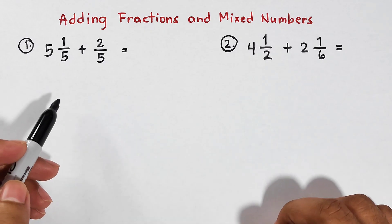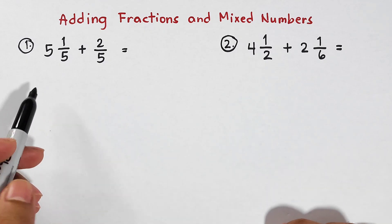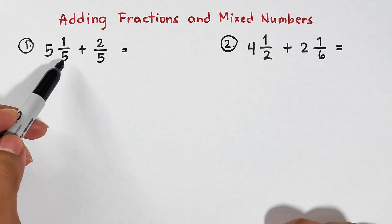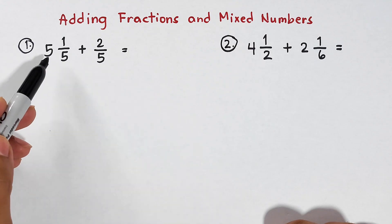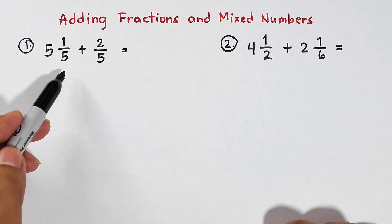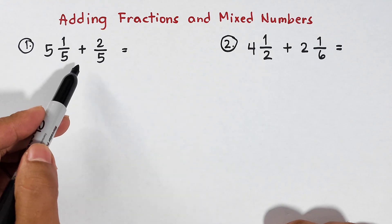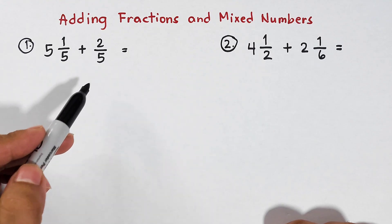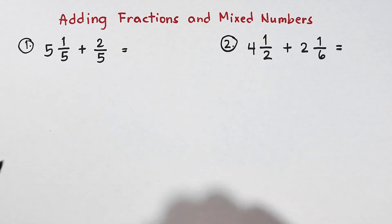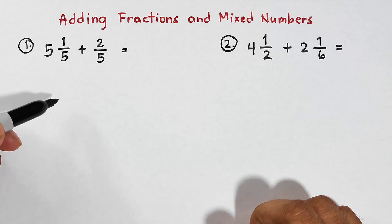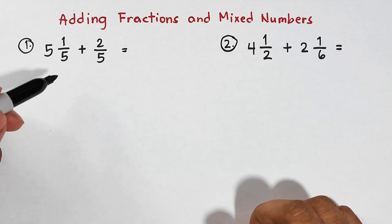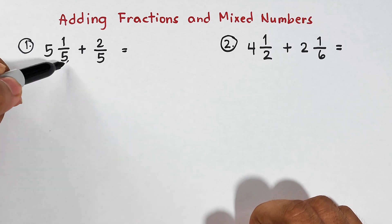What we have here in the first example is a mixed number and a fraction: 5 and 1 over 5 plus 2 over 5. This is an easy example because we have the same denominators.